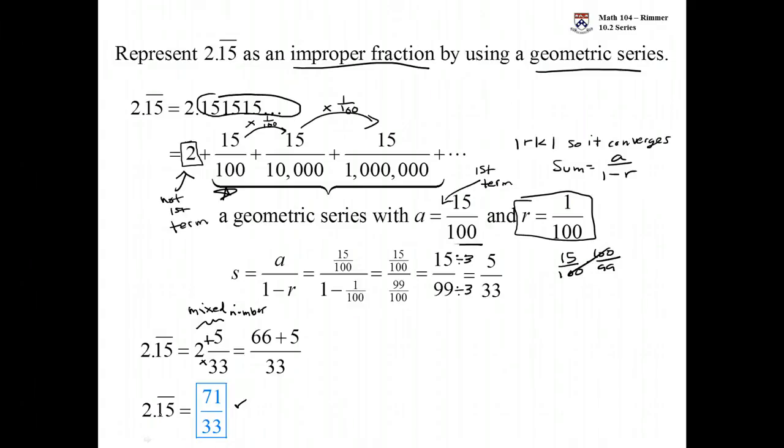That's how you write this repeating decimal as an improper fraction. Any part that's not repeating, pull it off on the side. The part that is repeating, write it as a series of fractions added together to give you a sum that you can find once you identify what the ratio is and what the first term is.